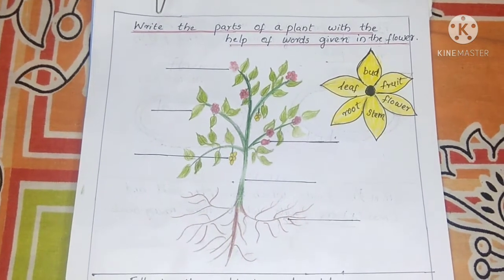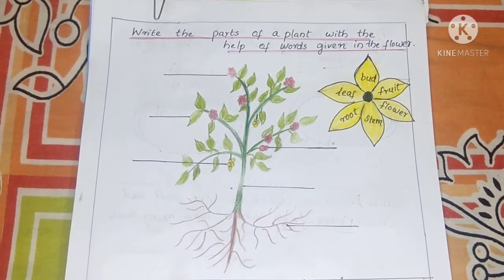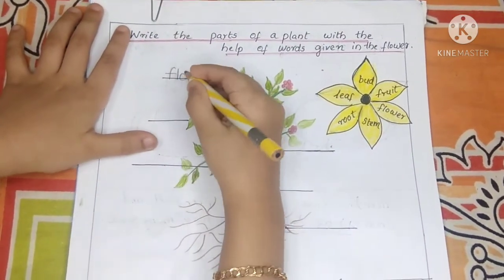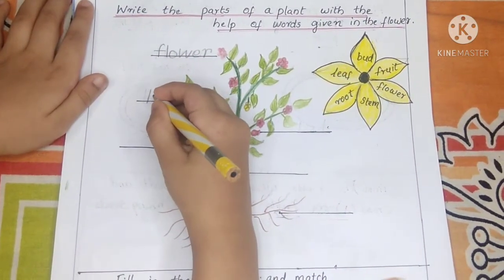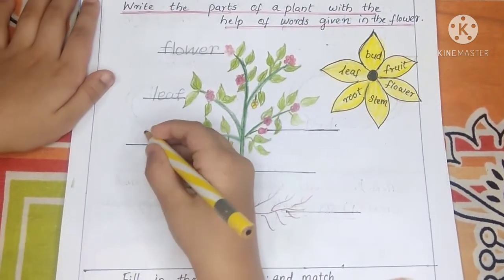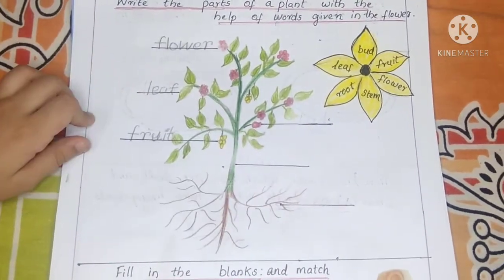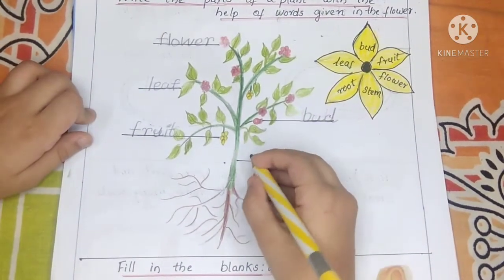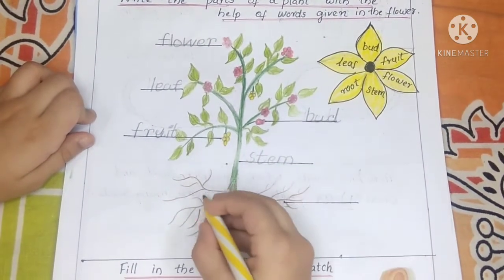Write the parts of a plant with the help of words given in the box. Flower. Leaf. Fruit. Stem. Root.